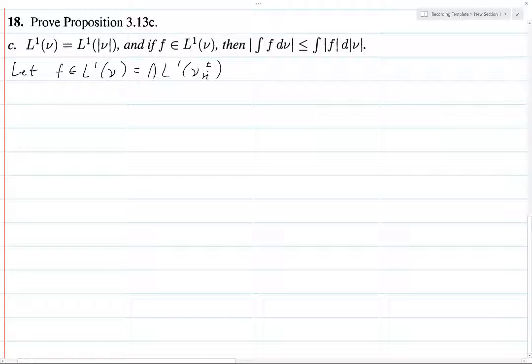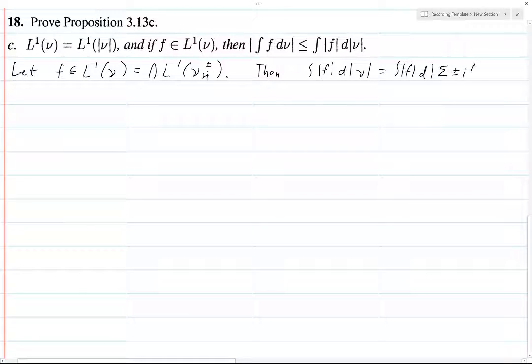So F is in the intersection of all of these L^1s. Then, the integral of F dν is equal to the integral of F d, and then we just write ν as, here, let's do it. I'm going to do this a very strange way. Plus minus i to the 1, 0, ν_{ri}^{±}.